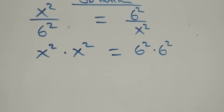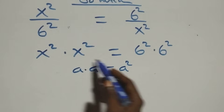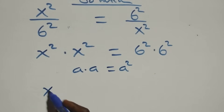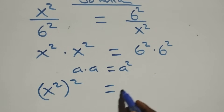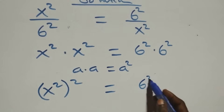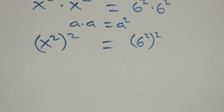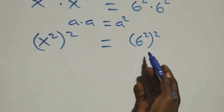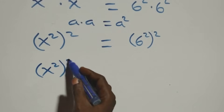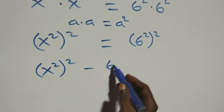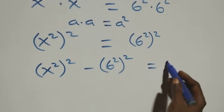From here, since a times a is the same as a squared, we can write this as x² squared equals 6² squared, which is x⁴ = 6⁴. Taking the right-hand side to the left-hand side, this becomes x⁴ minus 6⁴ equals zero.